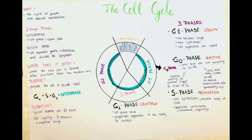First, the G1 phase — I call it the growth phase. This is where the cell becomes larger, develops more cytoplasm to reach the size of a normal mother cell, and the cell organelles are copied. After mitosis, the cell reaches its full maturity, divides, and prepares everything it needs for its normal everyday function.